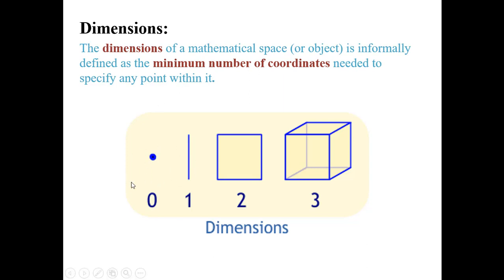A point has 0 dimensions. A line has 1 dimension — just imagine the real number line. Here are two-dimensional and three-dimensional spaces, which we will discuss in the next slides.